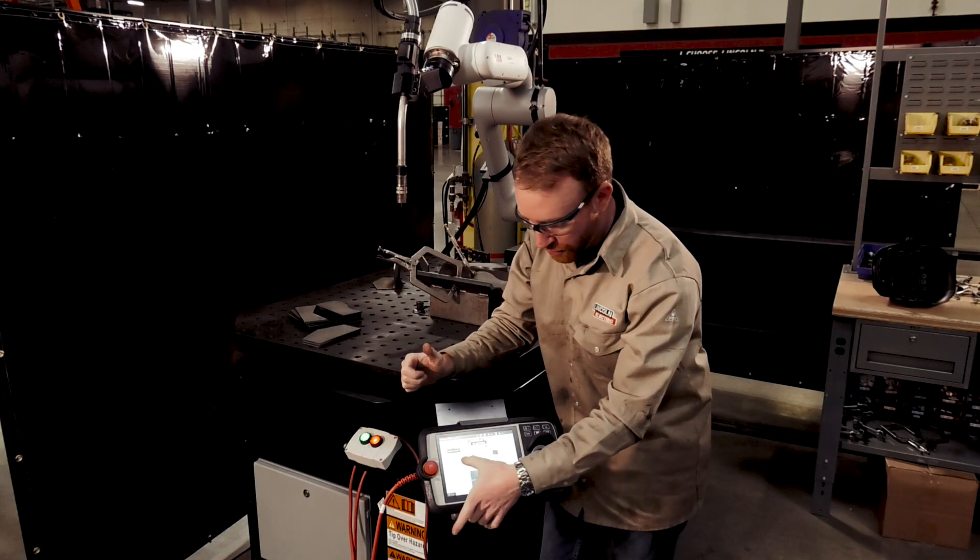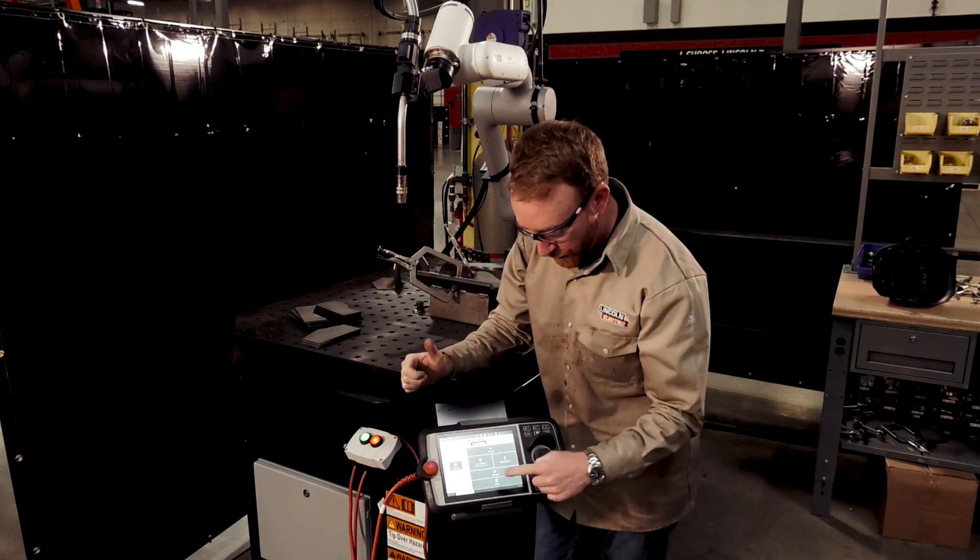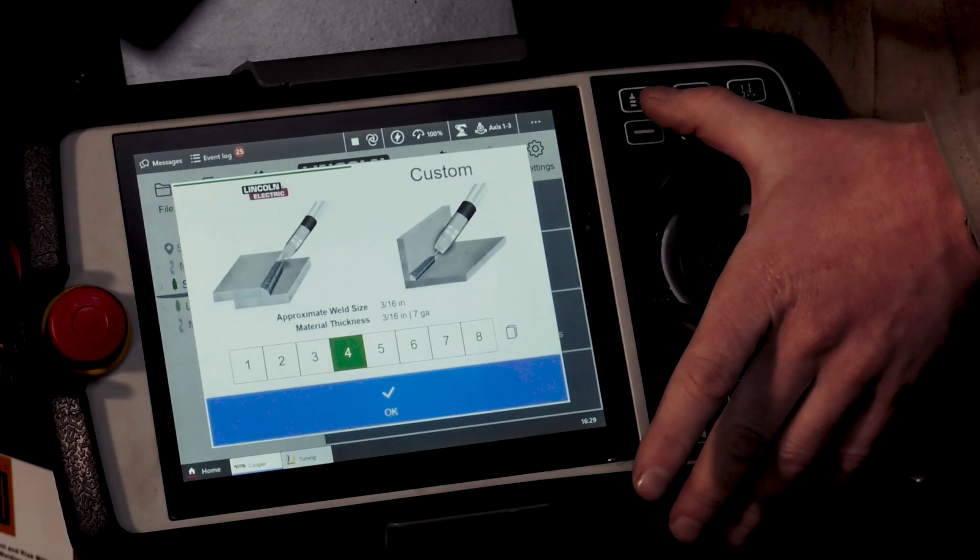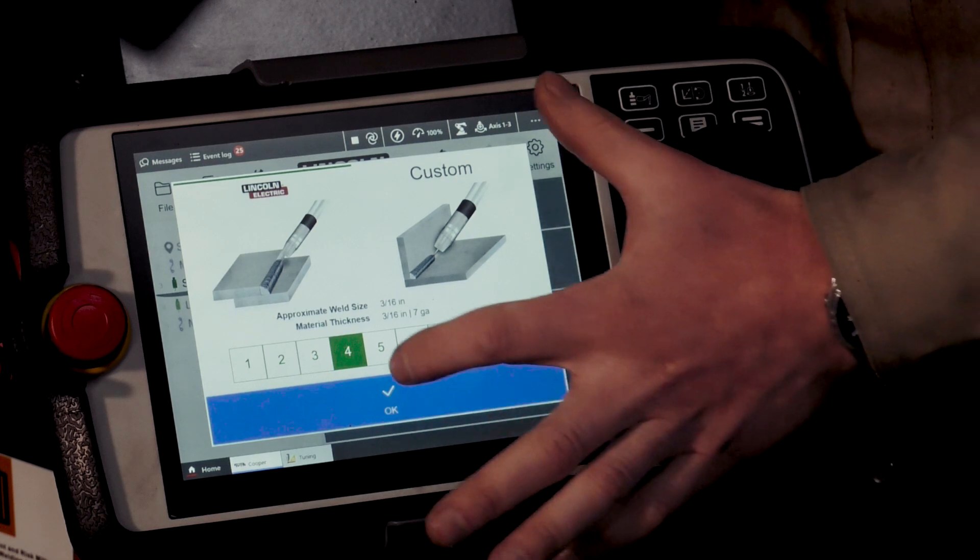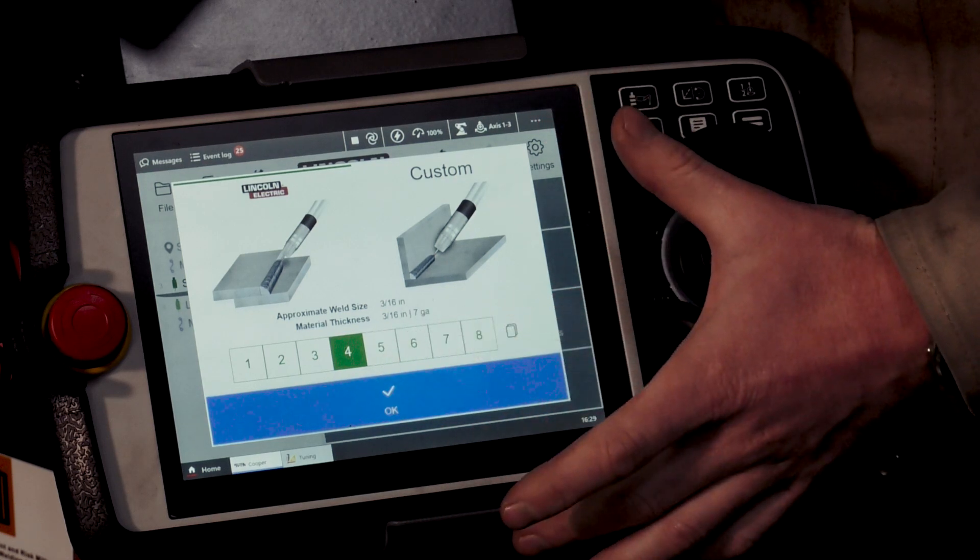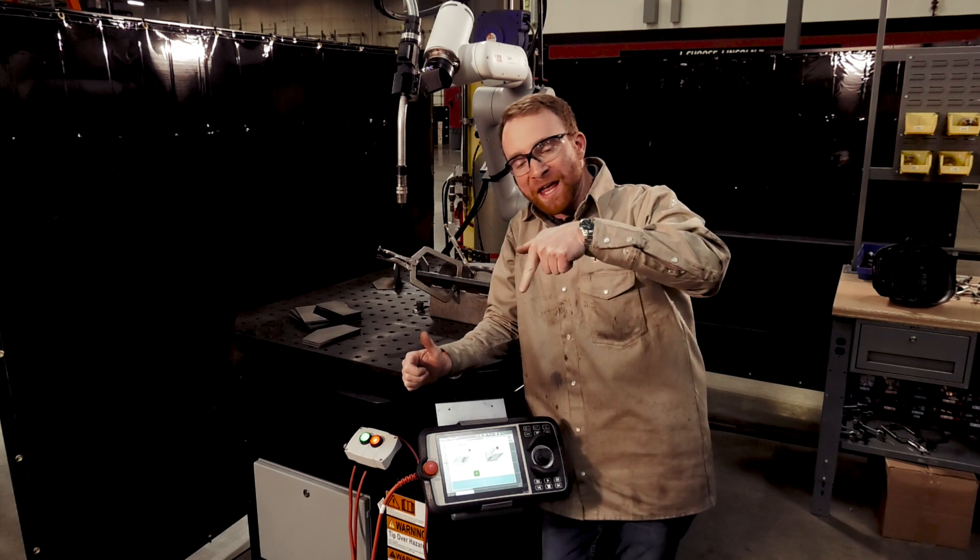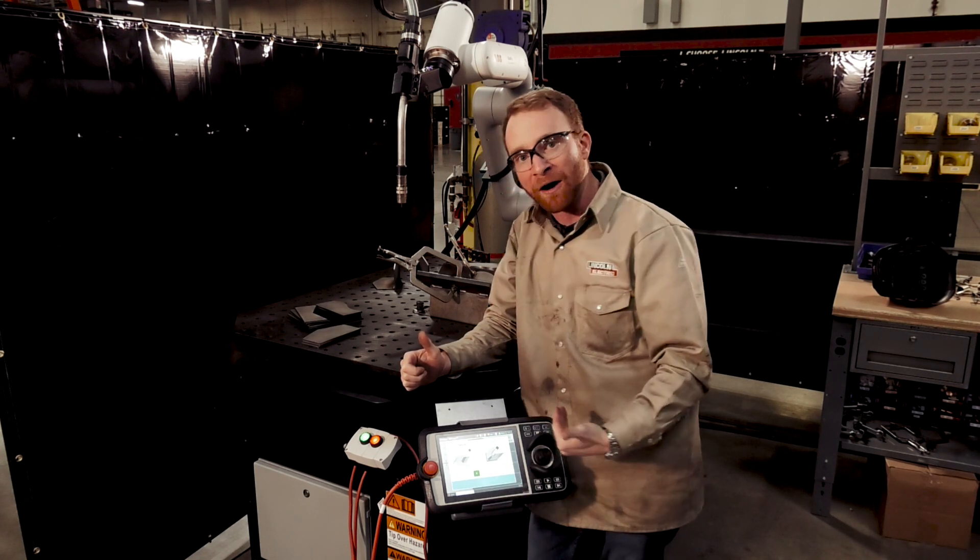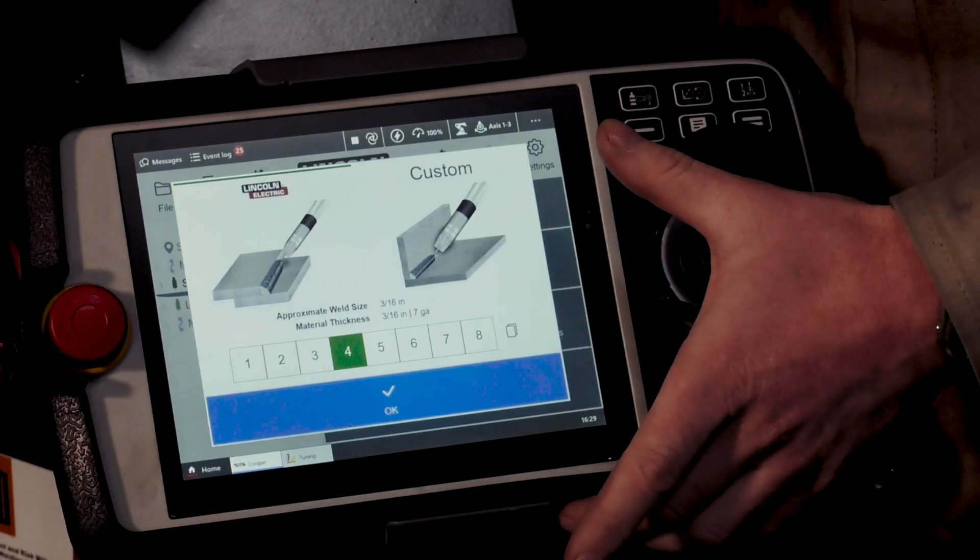So, we're going to go ahead and go over here to the weld settings. We're going to go to edit weld, and we're going to go to the weld by numbers. Inside the weld by numbers, we do have to make sure that there is a weave to this. Any job or any weld number above four, so five, six, seven, and eight,